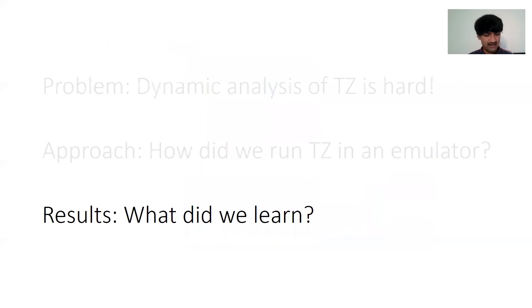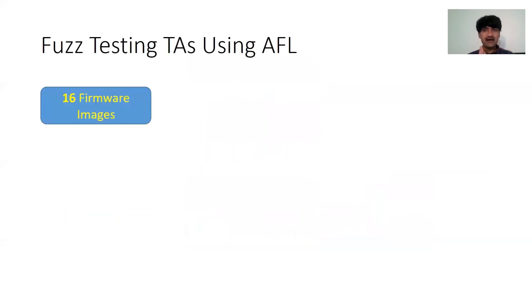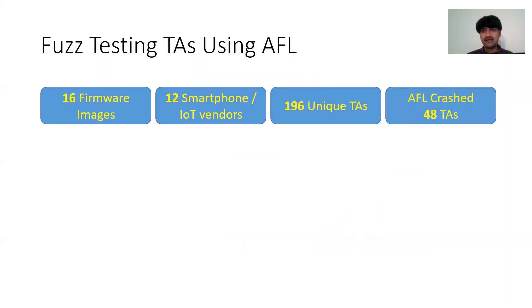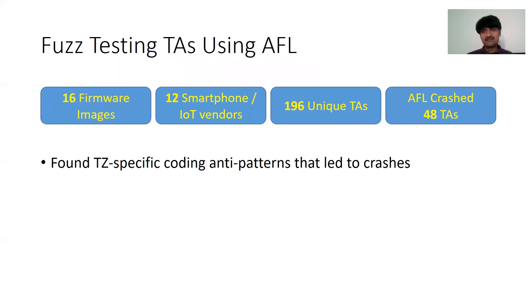What did we learn from this study? We performed a large-scale study of TAs extracted from 16 firmware images across 12 smartphone and IoT vendors, ending up with a corpus of close to 200 unique TAs. We ran AFL on them using our emulator and found that AFL crashed 48 of these TAs. Through manual analysis and reverse engineering of these crashes, we identified three specific coding patterns that led to them.